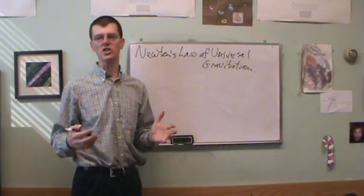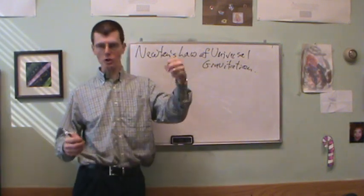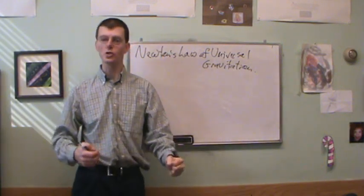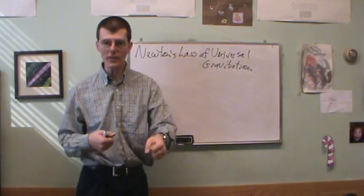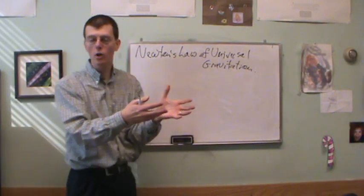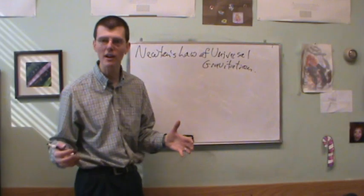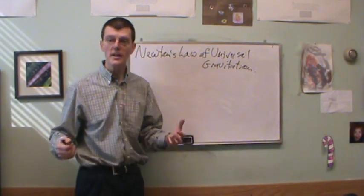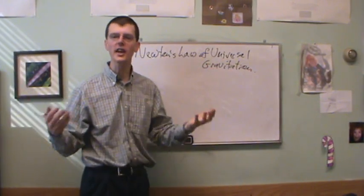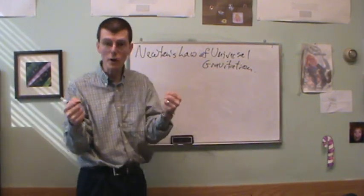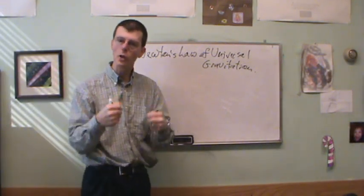Isaac Newton was the genius who said no — gravity is a universal force. The same force which causes the apple to fall out of the tree is the force which holds the moon in its orbit around the Earth, and the Earth in its orbit around the Sun. Everything has gravity. Gravity attracts every pair of objects in the universe toward each other.